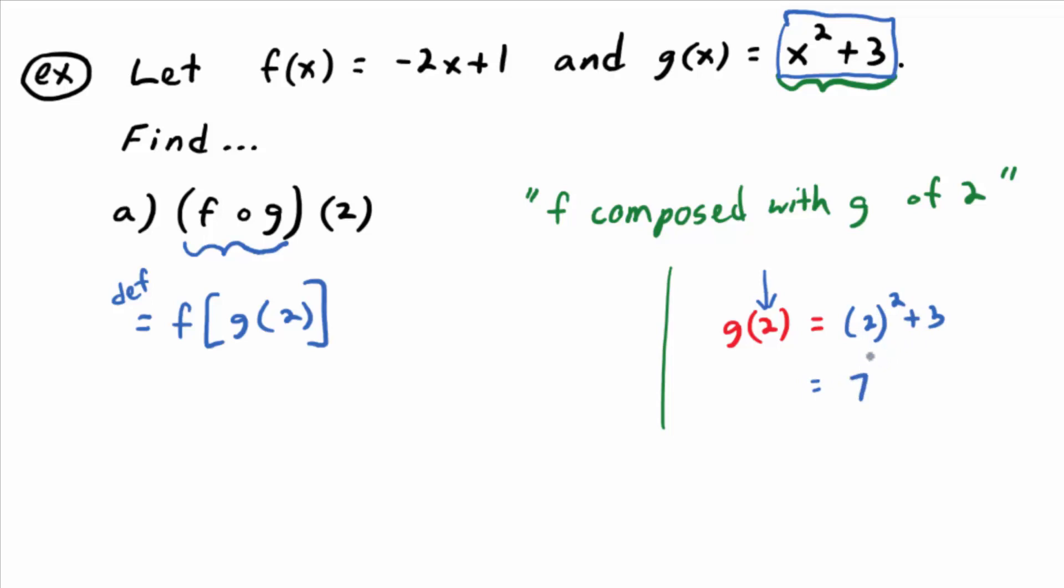So we're going to work this problem from the inside out. We're going to replace that g of 2 with what it's equal to. It's 7. So f of g of 2 is just f of 7, isn't it? And now you're in familiar territory, aren't you?